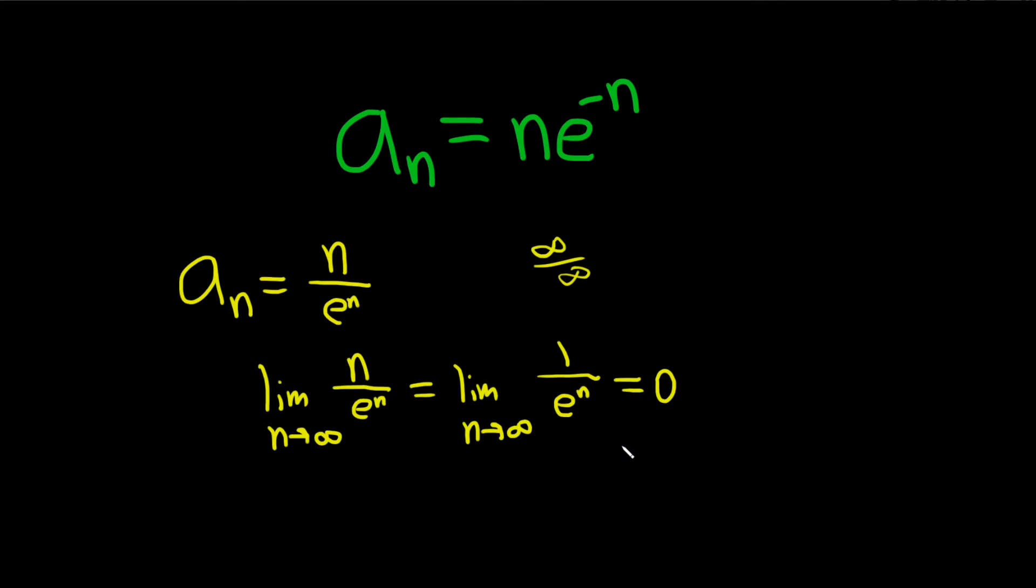So you might say, why do we take the limit? It's asking if it's bounded. Well, whenever you take the limit, if the limit exists, which it does, right? So in this case the sequence converges. So a sub n converges. Something magical happens. Whenever you have a convergent sequence, it's always bounded.